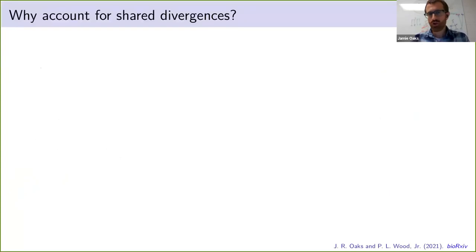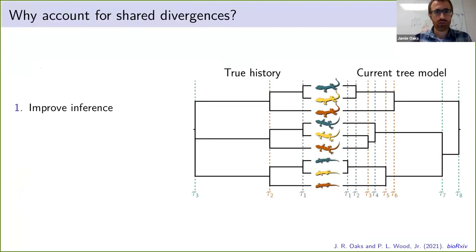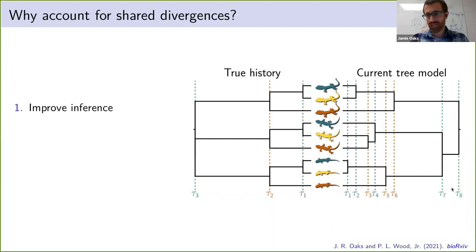So why should we care about these possible processes that generate shared divergences? Well, doing so might improve inference. If the true history looks something like this, current phylogenetic methods assume a model with eight independent bifurcating divergences, which in this case is over-parameterized — there were really only three events, and we're using eight parameters to try to explain them. So we're introducing unnecessary error into our analysis, and we want to avoid that.